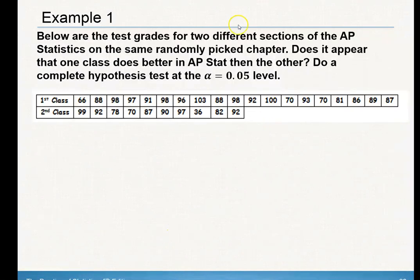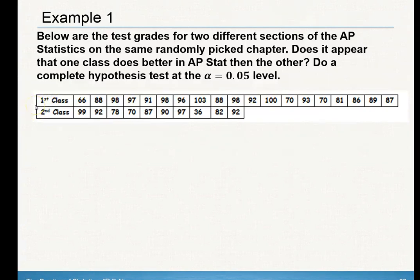Below are the test grades for two different sections of AP Statistics on the same randomly picked chapter. Does it appear that one class does better in AP stats than the other? Do a complete hypothesis test at the 5% level. These are two completely different classes — two populations — therefore it's a two-sample t-test and not a matched pairs test.